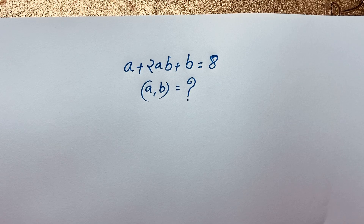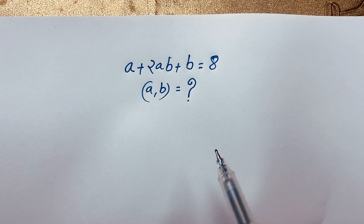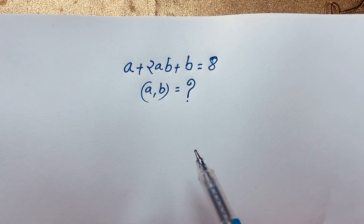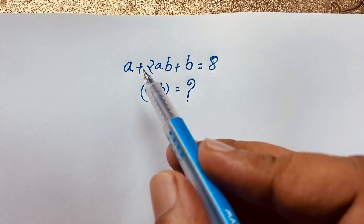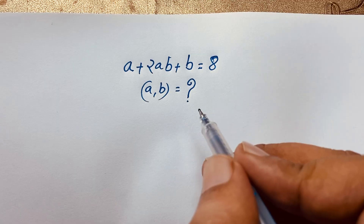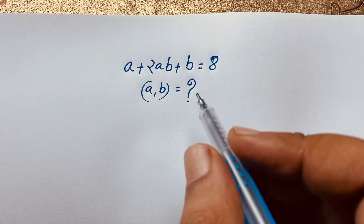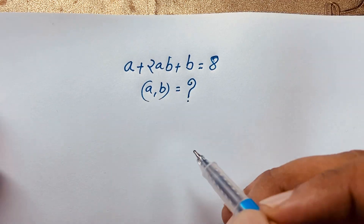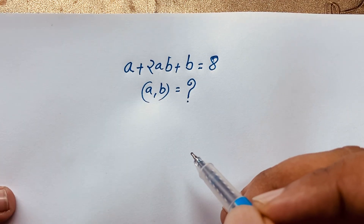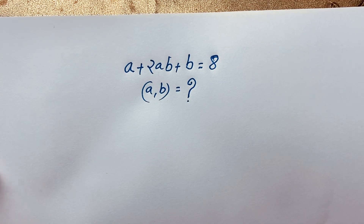Hello everyone. Welcome to Rasha's Classroom. Today we have solved a nice interesting math Olympiad question. This algebra question: A plus 2AB plus B is equal to 8. We will find out what is the value of A and B in this math problem — how to solve this interesting math question.